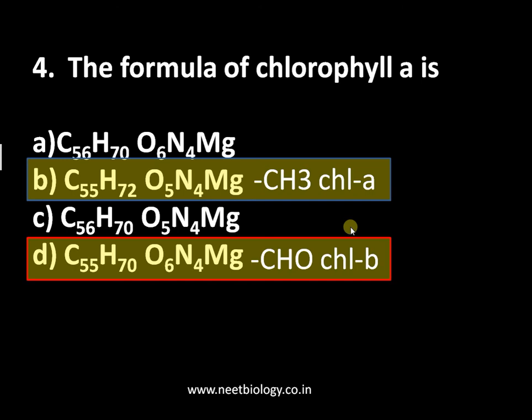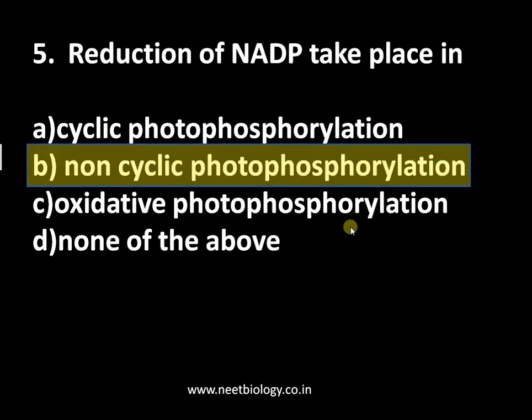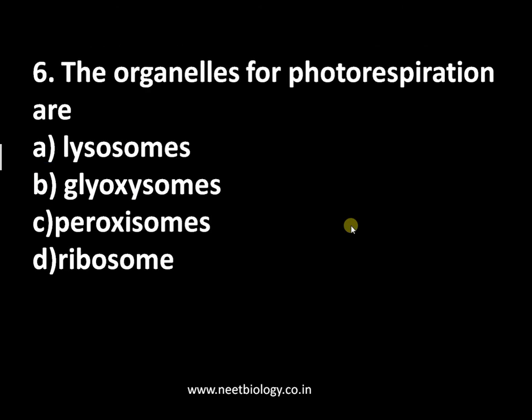Question number five: reduction of NADP takes place in — option A: cyclic photophosphorylation, option B: non-cyclic photophosphorylation, option C: oxidative photophosphorylation, option D: none of the above. The answer is non-cyclic photophosphorylation, where both photosystems are involved and both NADPH and ATP are synthesized. The enzyme involved in NADPH production is ferredoxin reductase or FNR. In cyclic photophosphorylation, only ATP is synthesized.